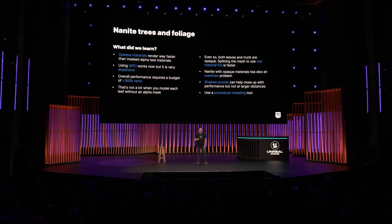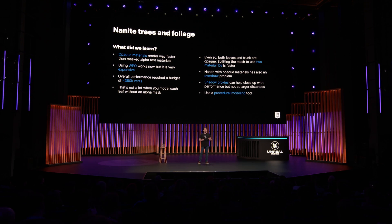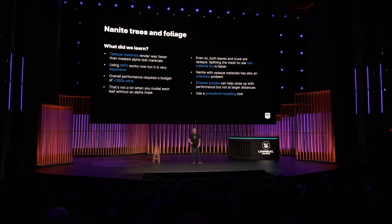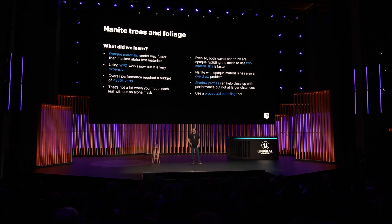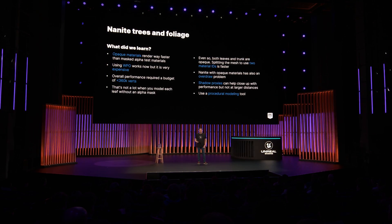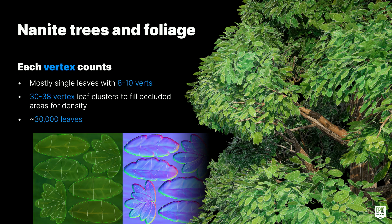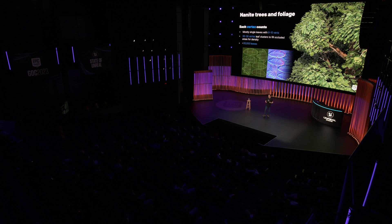Shadow proxies can help close the performance gap, but at distance they don't do much because Nanite targets about the same triangle count for the proxy mesh as for the real rendered mesh. When modeling trees this detailed, definitely use a procedural modeling tool. Each vertex counts — our trees are mostly built with single leaves using about 8 to 10 vertices, but we use a few bigger clusters with 30 to 38 vertices in occluded areas just to fill in density. They're actually higher in detail but save on overall vertex count because you don't have to spawn as many single leaves. In total, we spawn around 30,000 leaves on one tree.